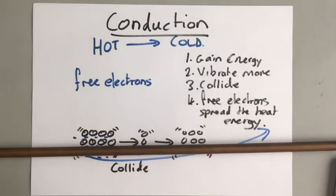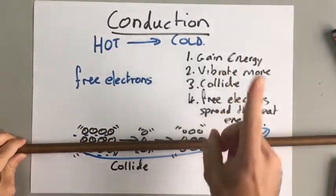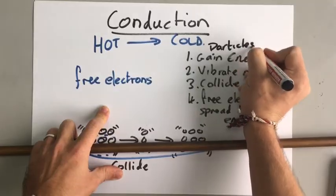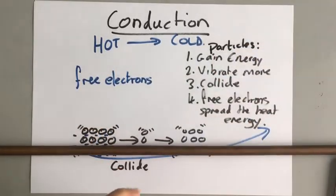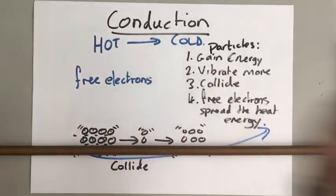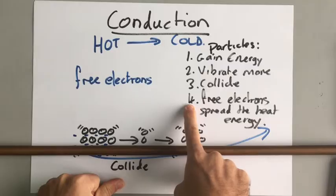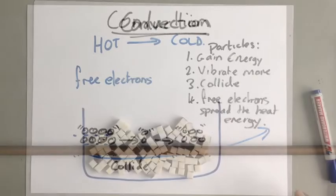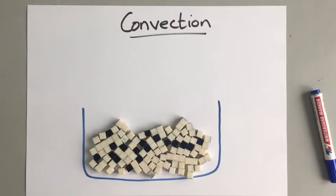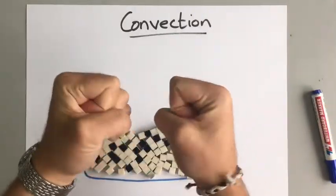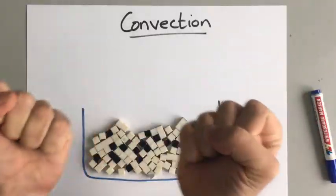To summarise, this is called conduction. Four things to remember: number one, the particles gain energy; number two, when they gain energy, they vibrate more; number three, when they're vibrating more, they're colliding more and passing on the energy; and in a metal, free electrons spread that heat energy around. Conduction only happens in solids because the particles cannot move around, so they transfer heat energy by colliding with each other.